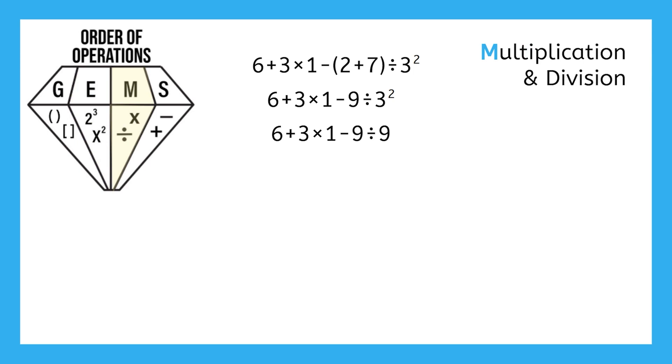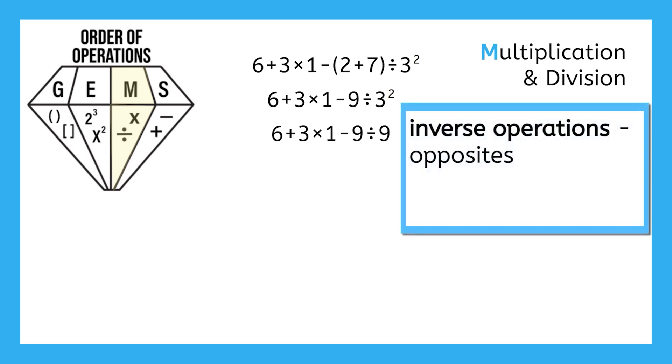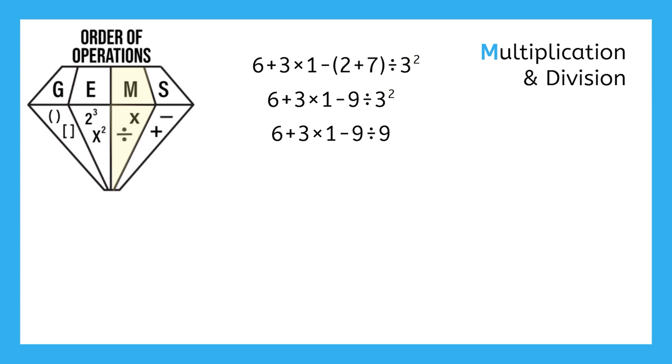Notice how multiplication and division are grouped into the same section of GEMS. That's because multiplication and division are inverse, or opposite, operations. For example, two times three equals six. And six divided by three equals two. Opposites. Multiplication and division are ranked equally in the order of operations, so we tackle them from left to right and solve whichever comes first.